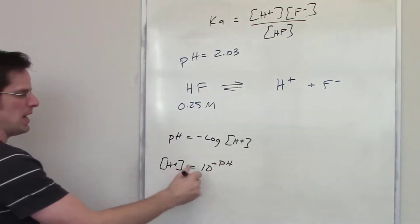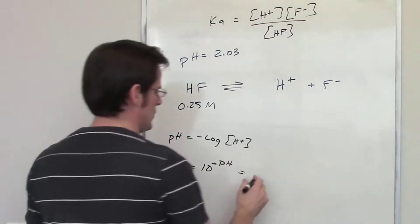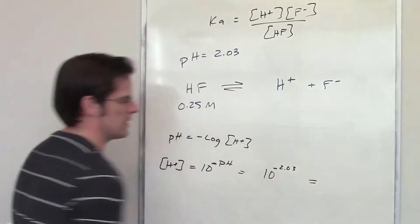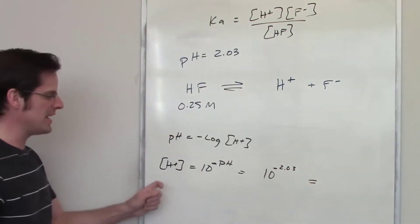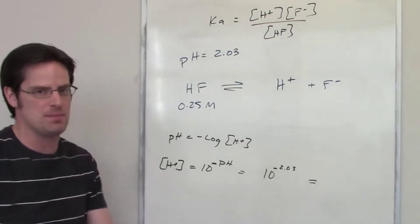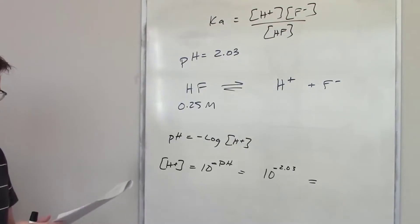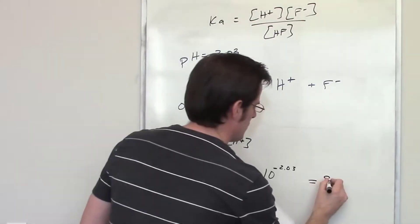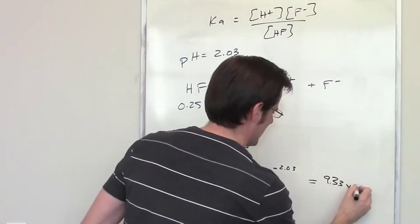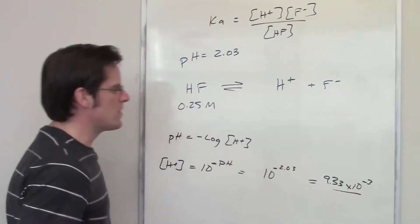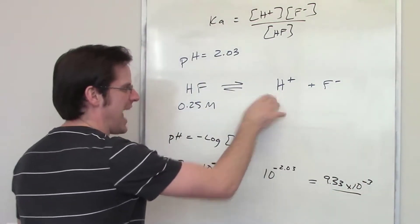In other words, the concentration of H plus is going to be equal to 10 raised to the negative 2.03 at equilibrium. I throw that in my calculator, that gives me the concentration at equilibrium of H plus. Now, I've done this before. That value comes out to be 9.33 times 10 to the negative third. It's a very tiny number. So, that's the concentration of H plus at equilibrium.